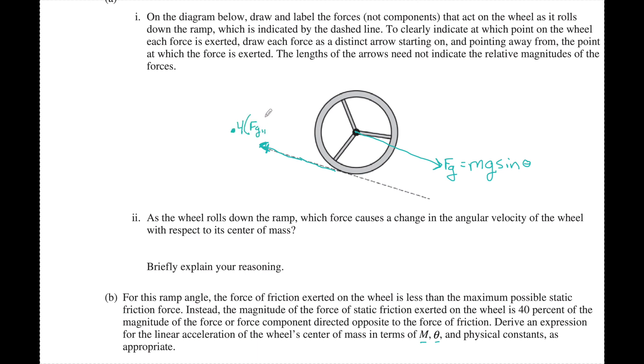So if I look at the acceleration of a system, which is equal to F net over m total, I see that the F net is really Fg parallel minus Fg parallel 40% of that, divided by the m of the wheel.